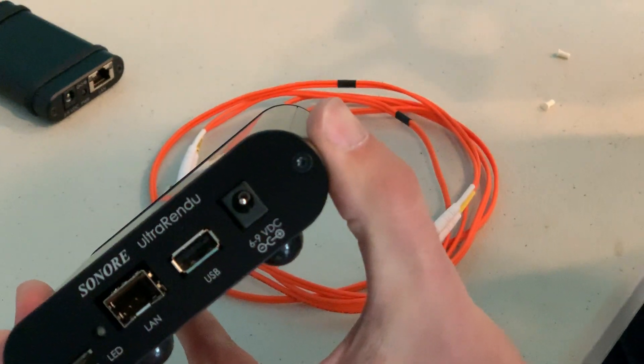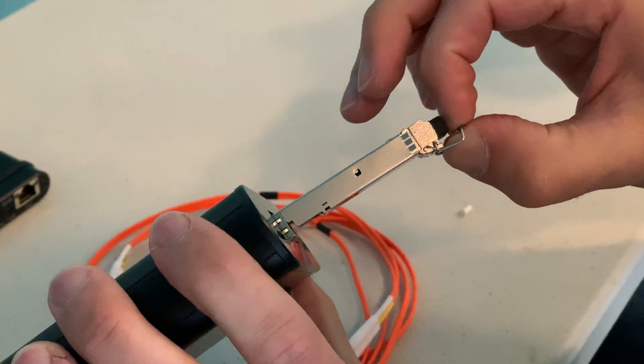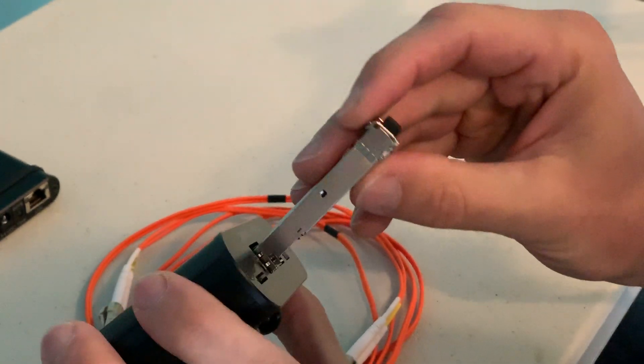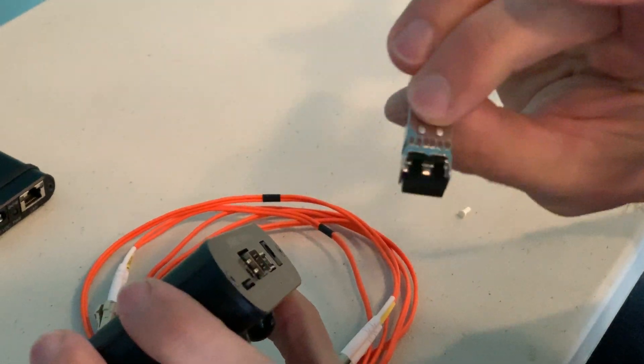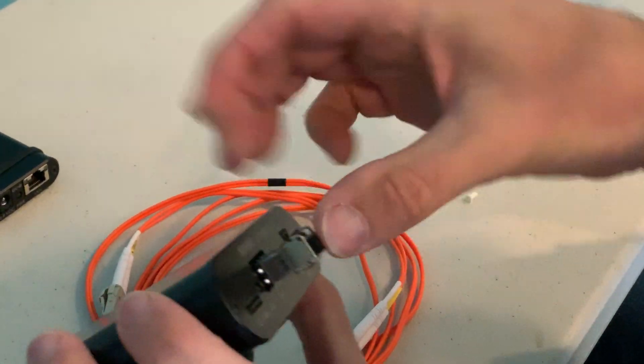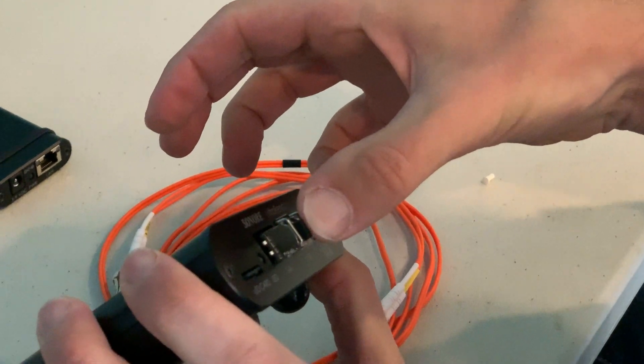We call this the SFP cage, and this thing just sits in here. You can close the little handle, then just slide the whole thing back in—the handle and the writing go up. Push it in until you hear a nice little click, and that's good.